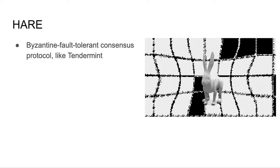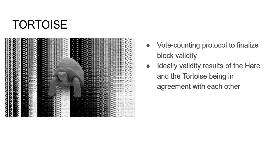The HARE protocol is a Byzantine fault-tolerant consensus protocol used to get agreement about which blocks in a given layer should be considered valid, and thus voted on by all Smeshers. The SpaceMesh protocol guarantees that blocks published on time will be considered valid.